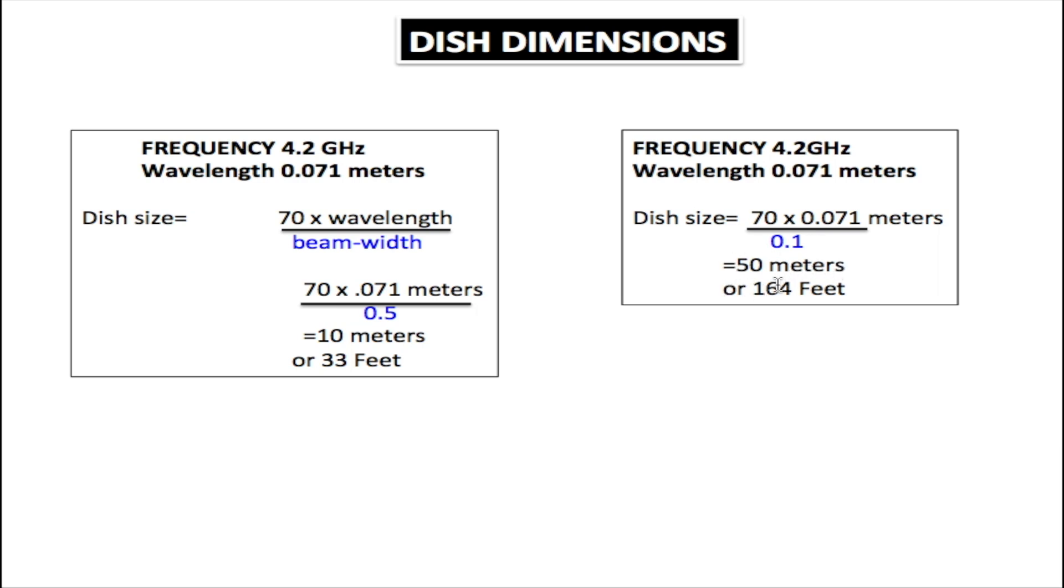This is 50 meters or 164 feet. For large dishes, we're going to have a much more narrow beam width. As we talked about earlier, the angle is not as great because it's only 0.1 instead of 0.5. By the time it gets to the geostationary satellite, it is not as wide, so you have a much stronger signal.